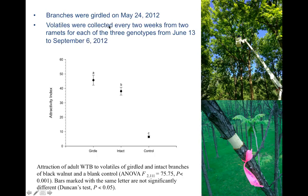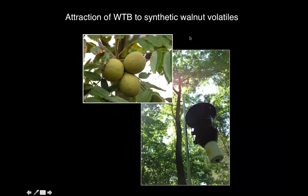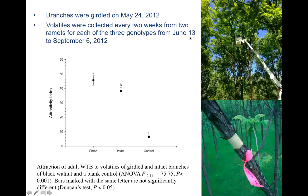The branches were girdled in early May 2012, and then volatiles were collected every two weeks from two ramets of each of three genotypes throughout the growing season. We made composite samples of the volatiles collected. We found that the beetles were indeed more attracted to the volatiles of girdled versus intact branches. We then used this information to compare the profiles of girdled and intact branches.